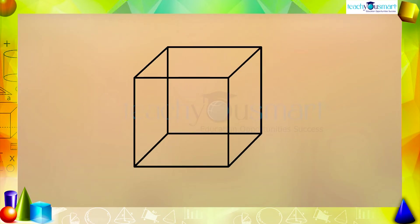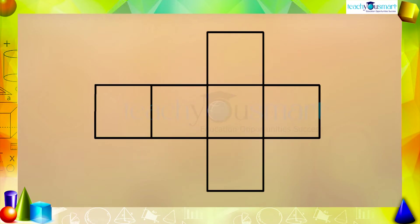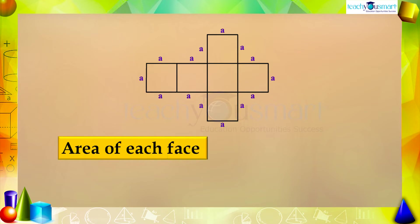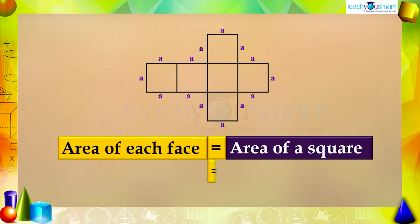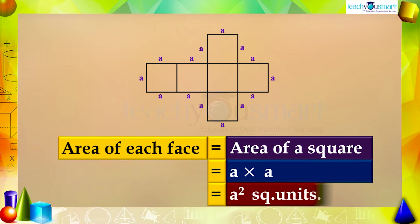Let's take a cube of edge 'a' units. Since all faces are congruent, all its edges are of equal length. Just open the cuboid box and lay it flat — now we can see the six congruent squares. The area of each face is the area of a square, which equals a × a = a² square units.